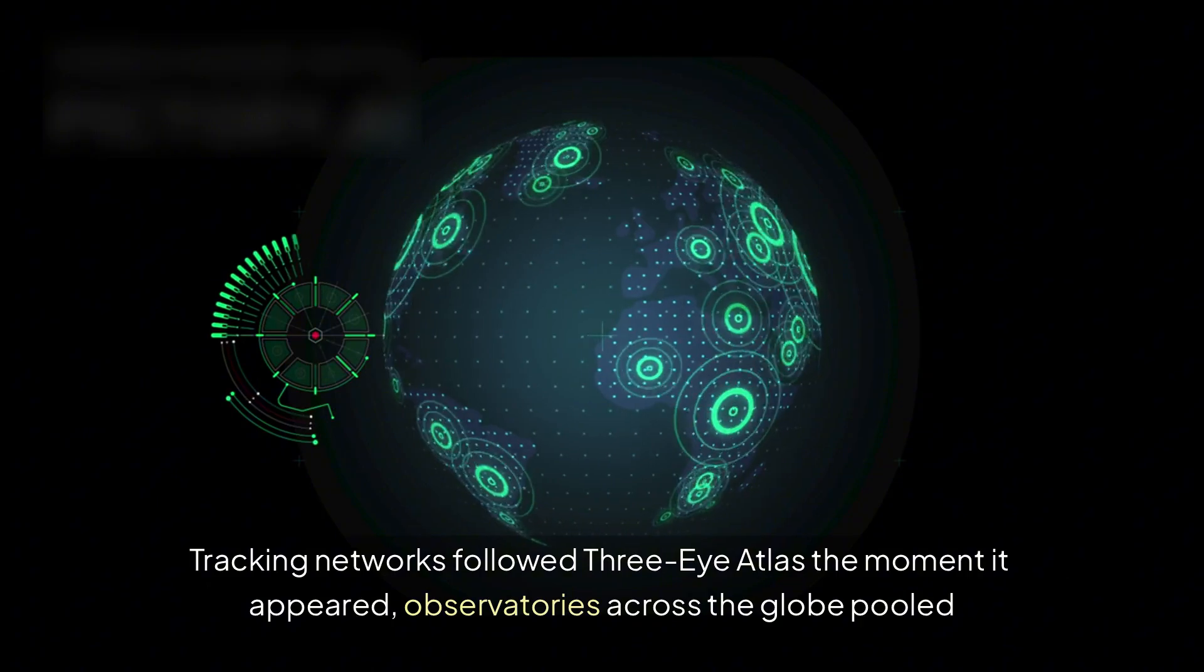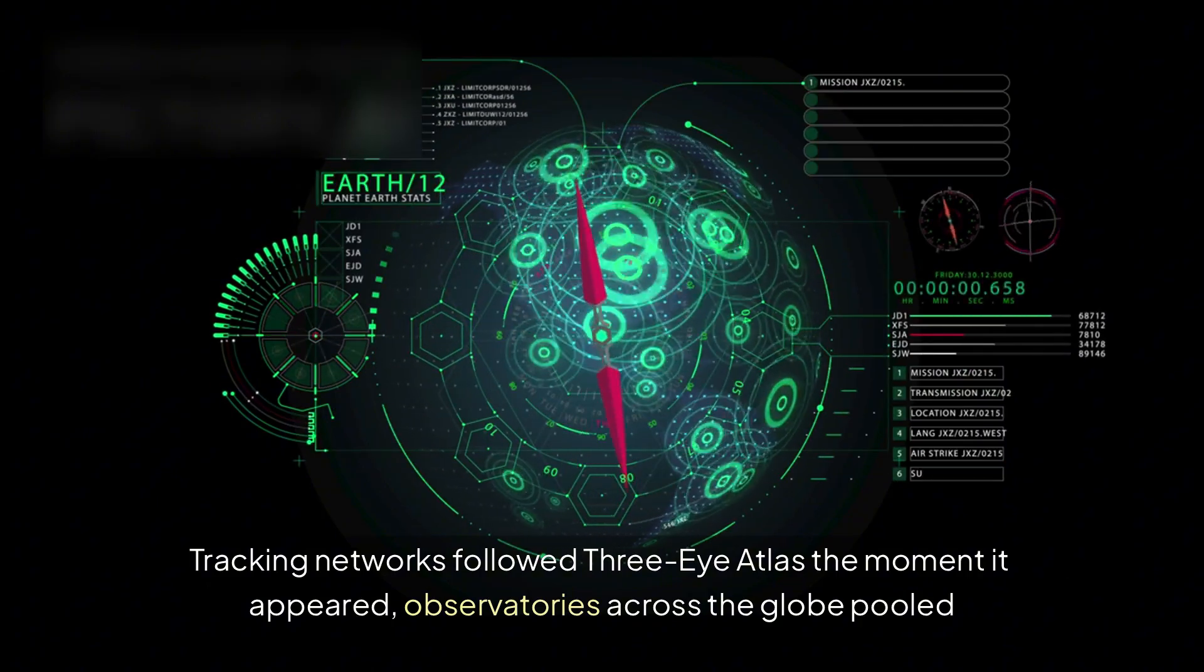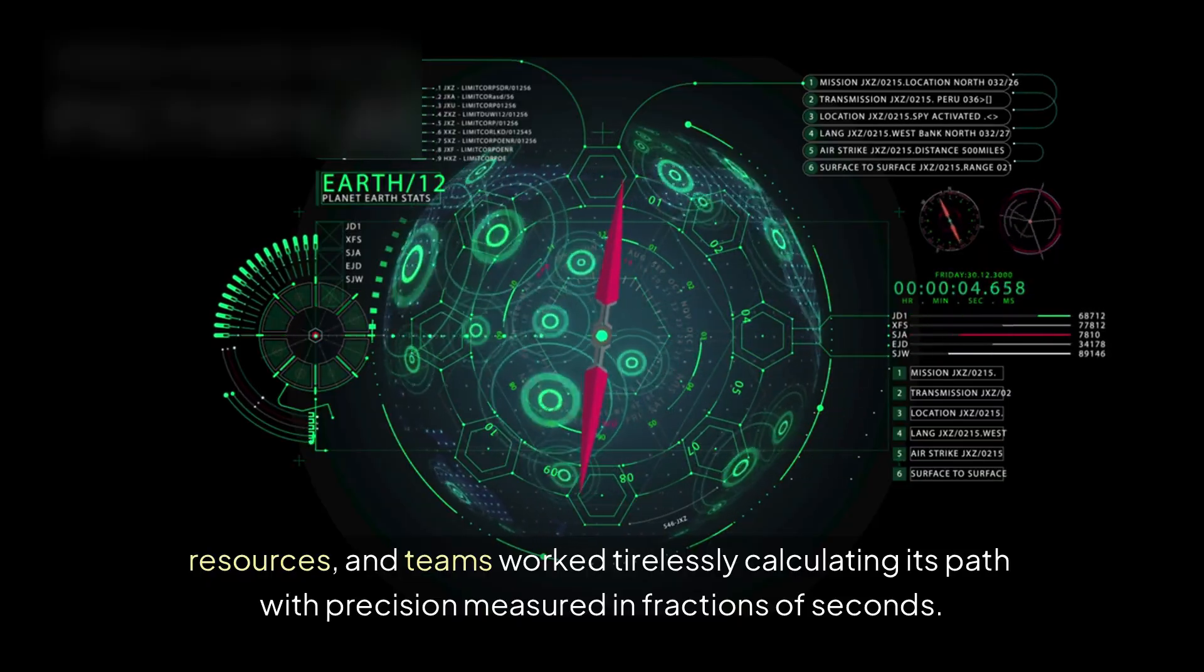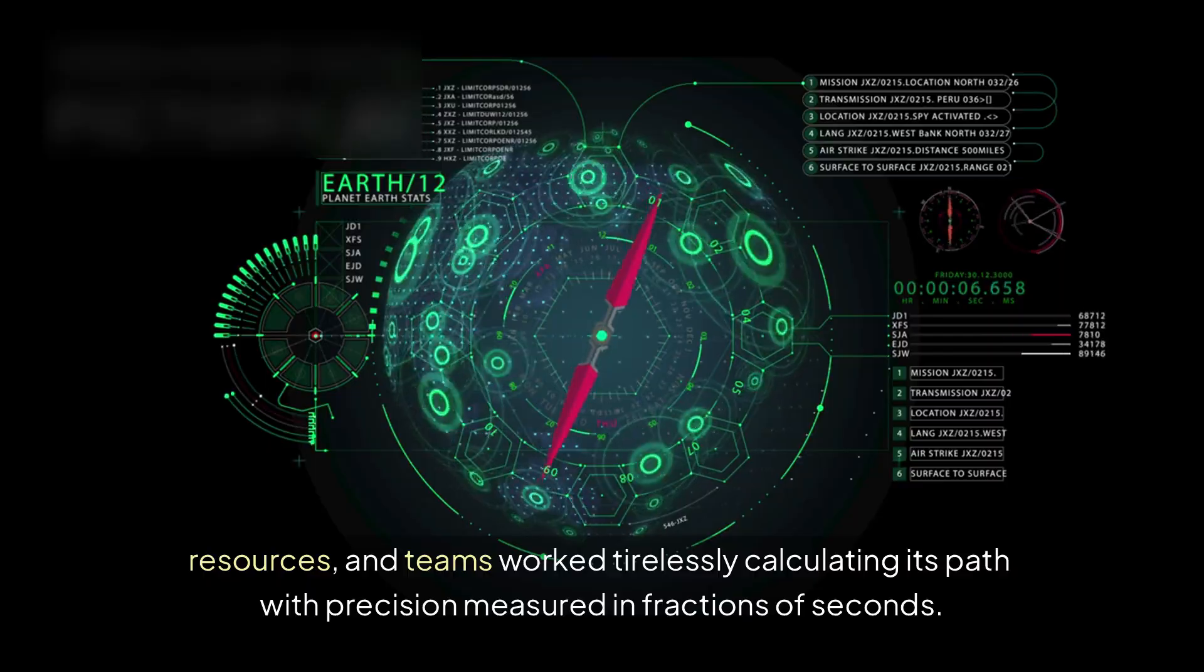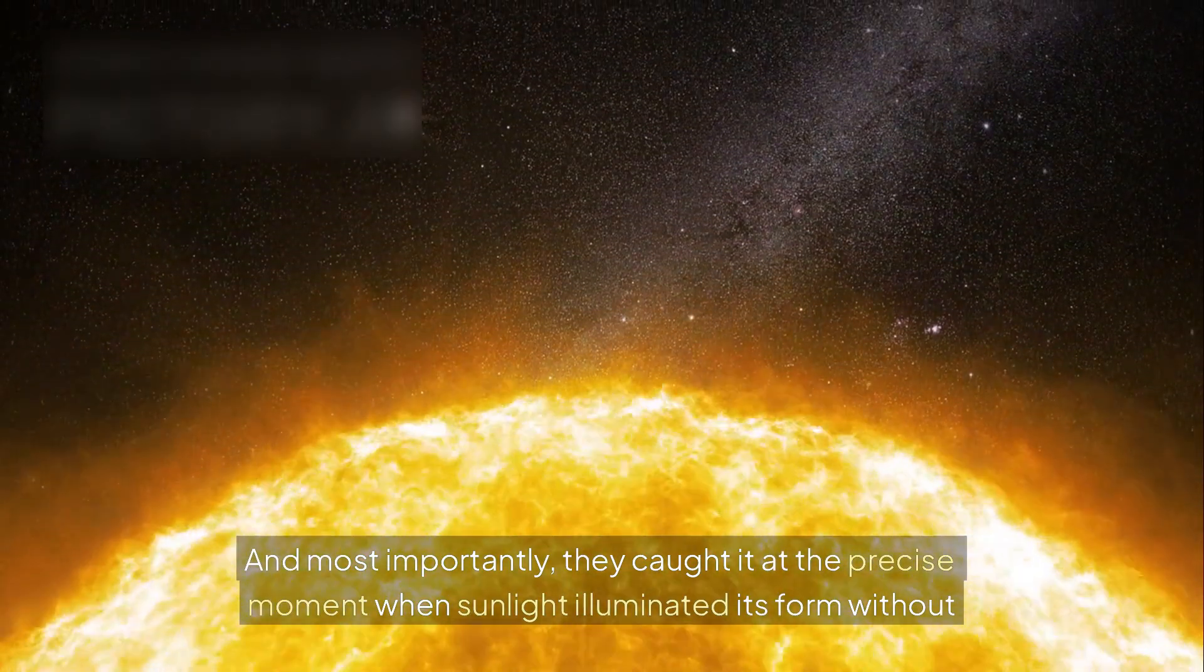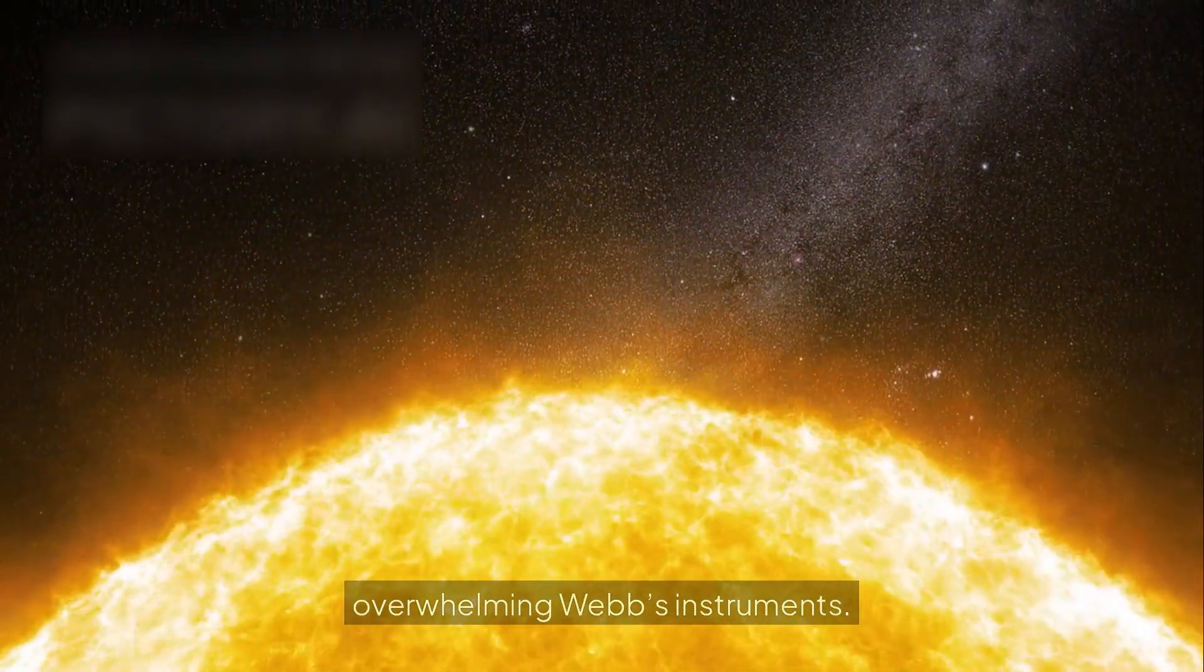Tracking networks followed 3I Atlas the moment it appeared, observatories across the globe pooled resources, and teams worked tirelessly calculating its path with precision measured in fractions of seconds. They caught it early, caught it bright, and most importantly, caught it at the precise moment when sunlight illuminated its form without overwhelming Webb's instruments.